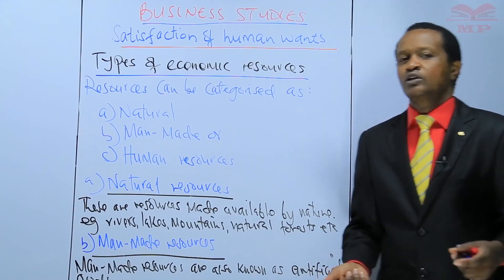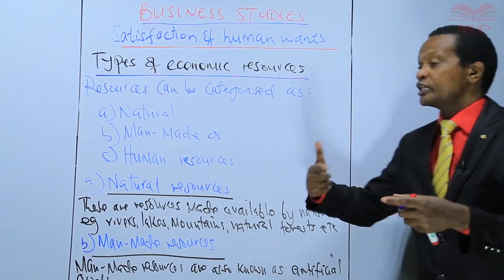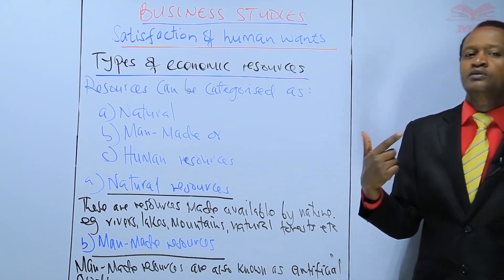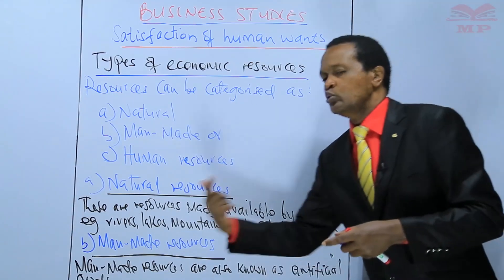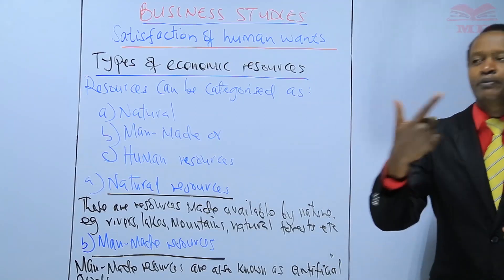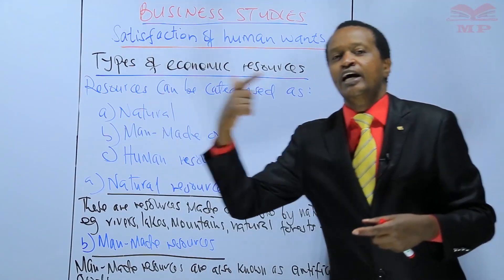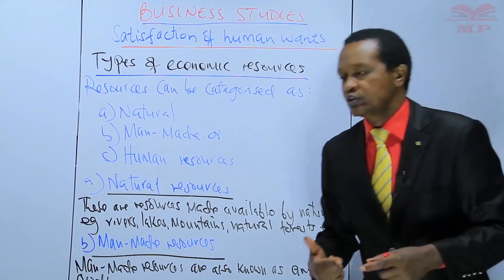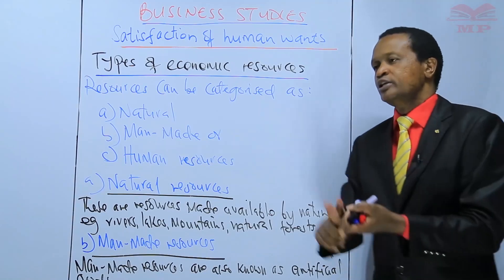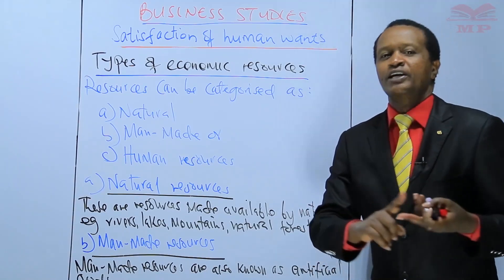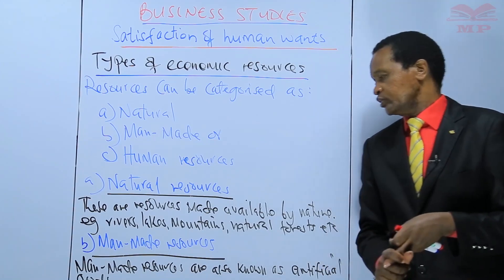On the other hand, there are goods that are used to produce other goods, and these are termed as capital goods, also known as producer goods. They include tools, plant, machinery, commercial vehicles, and so on.